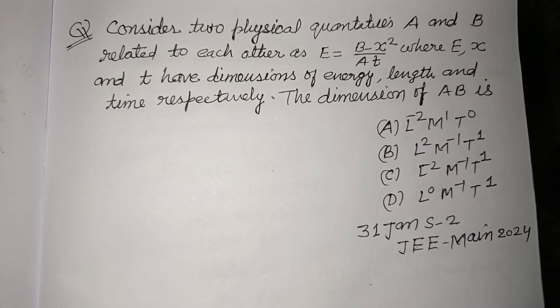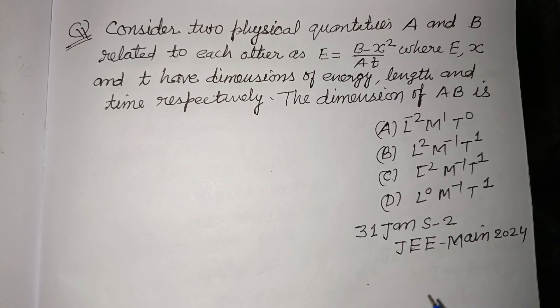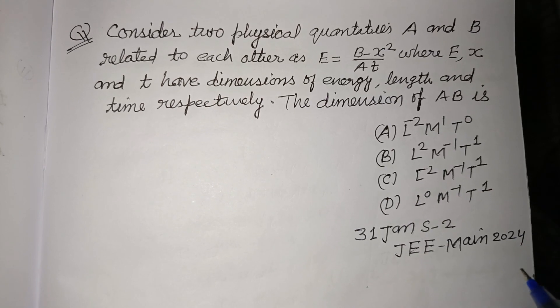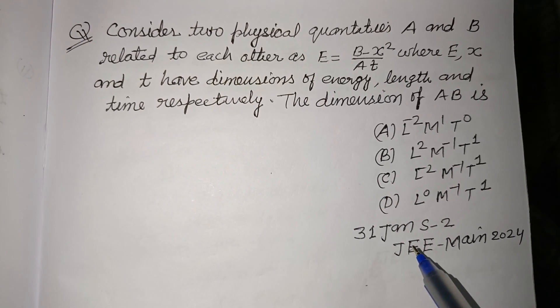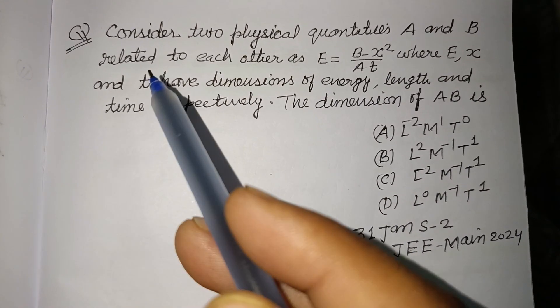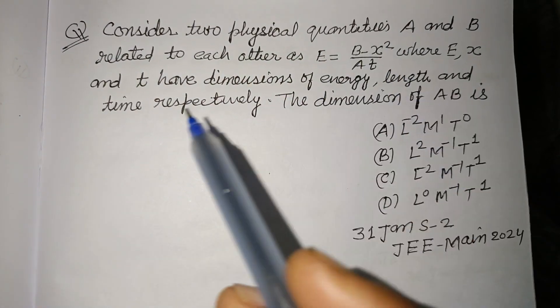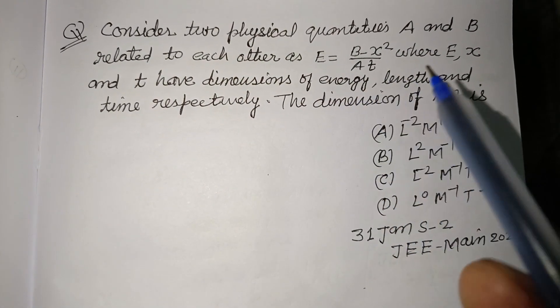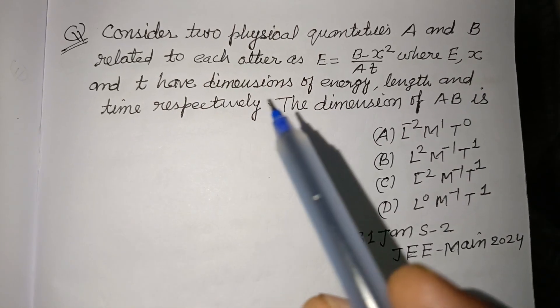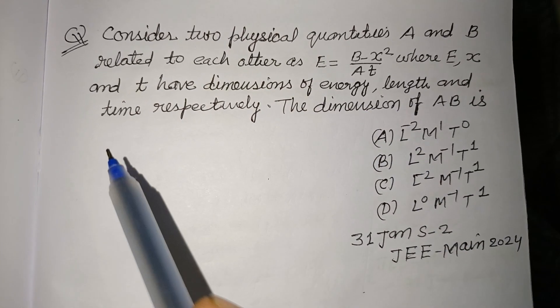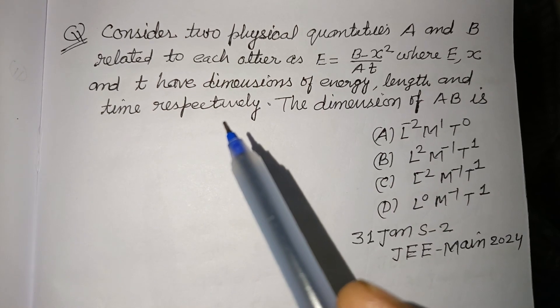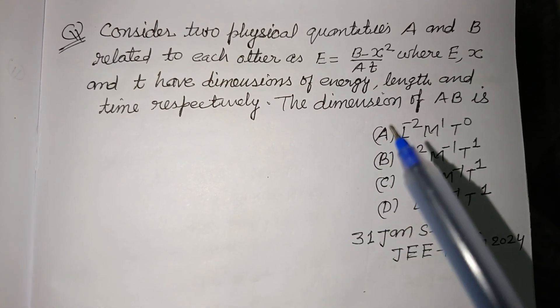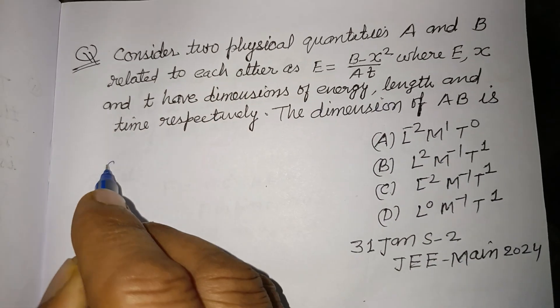Hello viewers, warm welcome to this YouTube channel. This is a question from JEE Main 2024, 31st January shift 2. Consider two physical quantities A and B related to each other as E = (B - x²)/(At), where E, x, and t have dimensions of energy, length, and time respectively. The dimension of AB is...